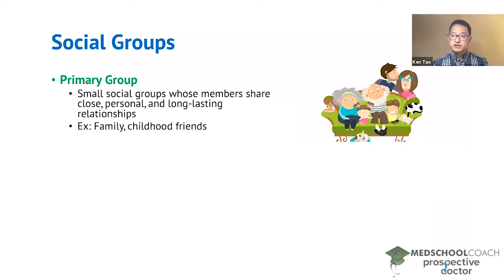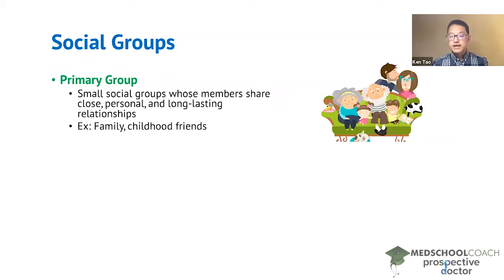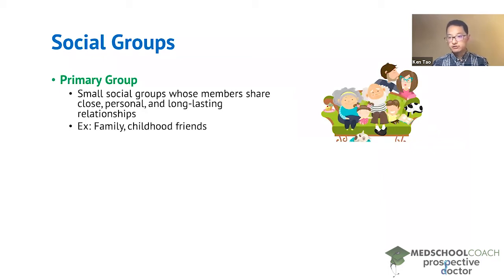Next let's talk about primary groups as well as secondary groups. Primary groups are small social groups whose members share close, personal, and long-lasting relationships. If you think about the individuals with whom you share these features, you'll probably identify quickly that those would be your family members as well as your childhood friends. These are the two standard examples for primary groups.